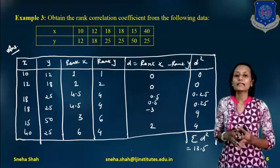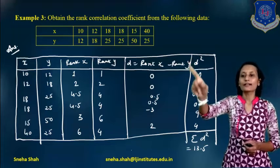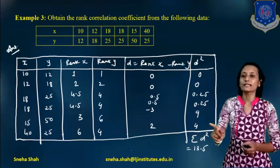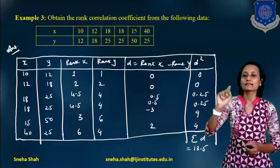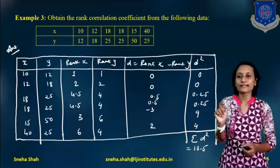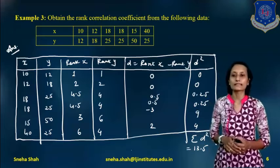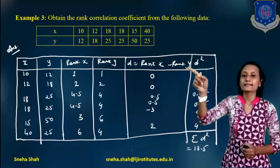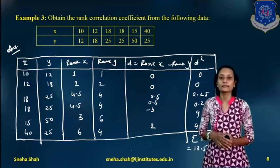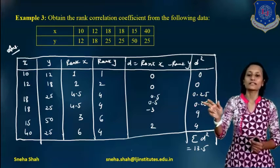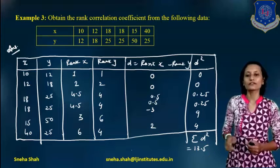Similarly, for rank y: y values are 12, 18, 25, 25, 25, 50. Ascending order gives 12 as rank 1, 18 as rank 2. Since 25 appears three times occupying ranks 3, 4, and 5, we take the average: 3 plus 4 plus 5 divided by 3 equals 4. So all three 25s receive rank 4. Then 50 is rank 6. Taking D as rank x minus rank y: 1 minus 1 equals 0; 2 minus 2 equals 0; 4.5 minus 4 equals 0.5, and so on. D-squared values are 0; 0; 0.25, and so on. Summation D-squared equals 13.5.